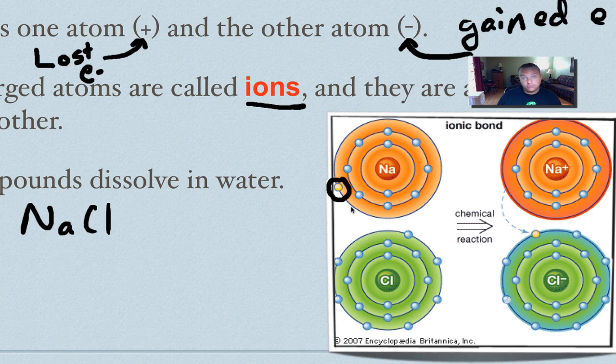So which one do you think is easiest: to gain seven or to lose one? Obviously get rid of that one. One is the easiest. So what happens is that valence electron will pop off, and that will make sodium positive.